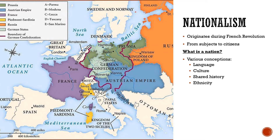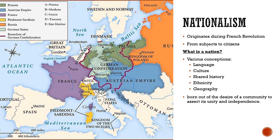Other conceptions of nationhood might also include ethnicity — so groups of people of the same ethnicity might consider themselves part of the same nationhood. And of course there's also geography as another measure of nationhood. The point is that different people consider nationhood in different ways and there is no one way to think about it. It's this concept of nationhood that is really the most important thing — born out of a desire of a community to assert its unity and independence, whether that community is bound by language, culture, shared history, ethnicity, or geography. It is this desire for independence from some larger group that makes nationalism so dangerous to large empires.